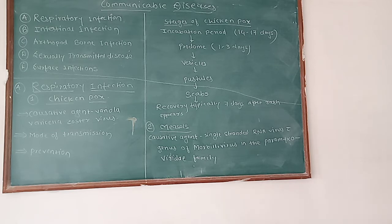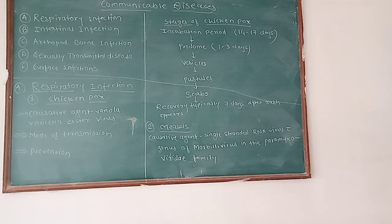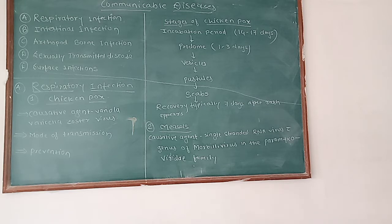Upper respiratory tract infections are illnesses caused by an acute infection which involves the upper respiratory tract — that is, the nose, sinuses, pharynx, or larynx. These commonly include tonsillitis, pharyngitis, and laryngitis.